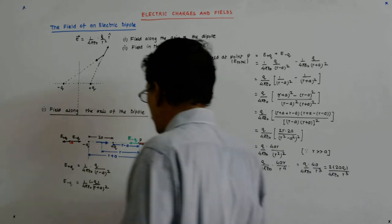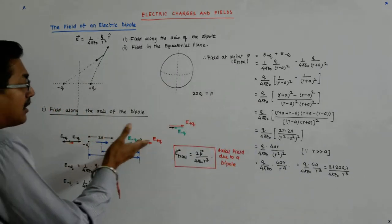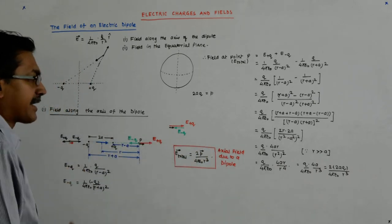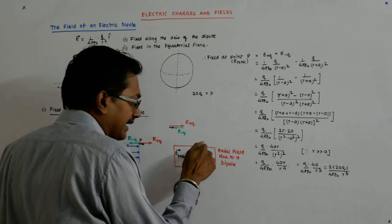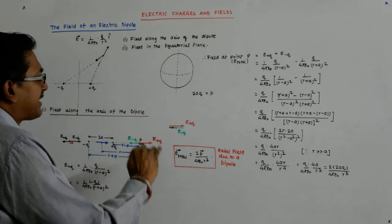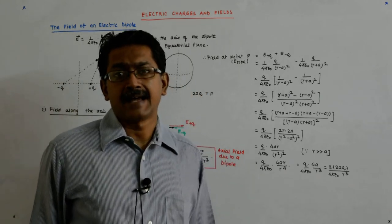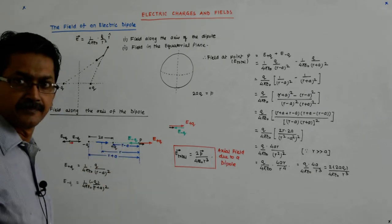So we see, whatever be the case - you be on this side, you be on this side, along the axis, farther, near, wherever - the direction of your electric field is always in the same direction as the dipole moment. Fine.